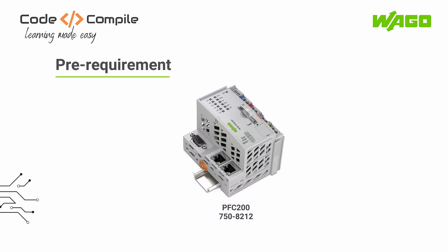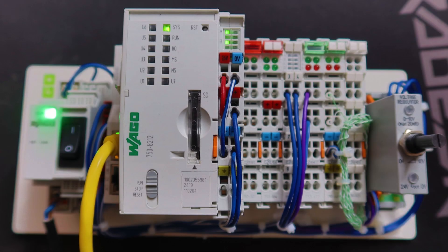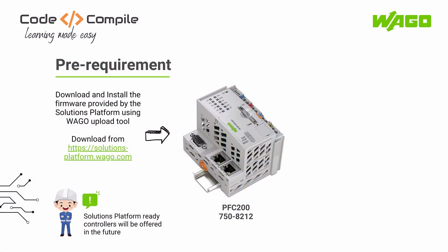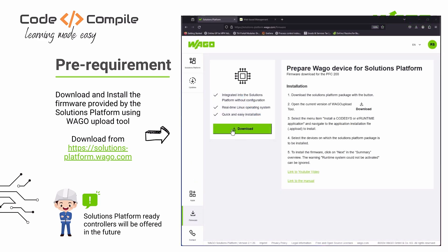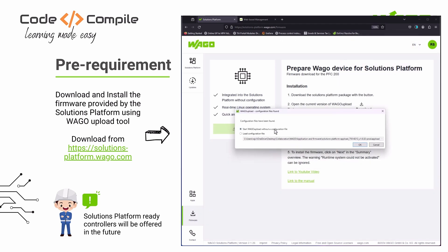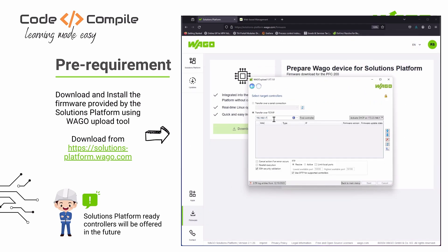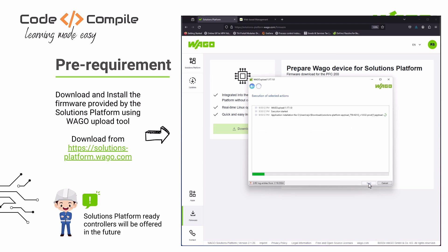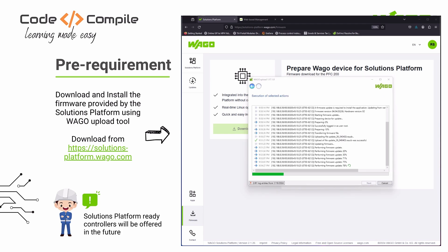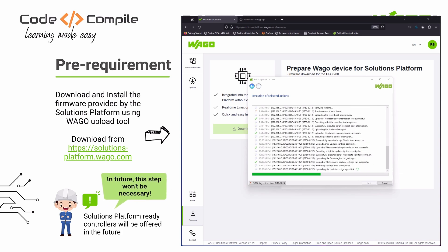Before you continue, you have to prepare your PFC 200 controller. First, download and install the firmware provided by the solutions platform — you need to log in to the solutions platform to get the download link. After downloading the firmware, it can be transferred to the PFC 200 via the WAGO upload tool, which can be downloaded from the WAGO download center. It will take about 10 to 12 minutes to transfer the firmware depending on your network.